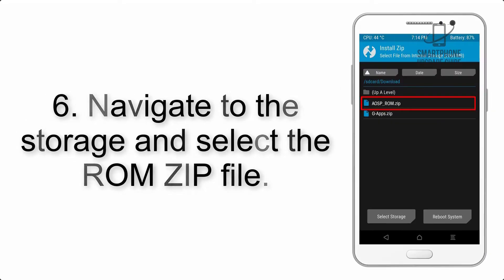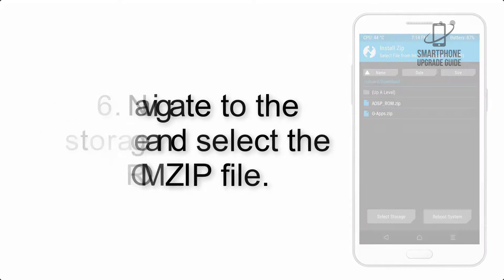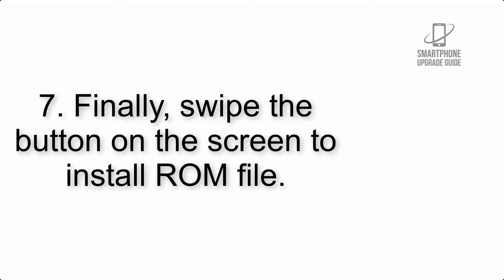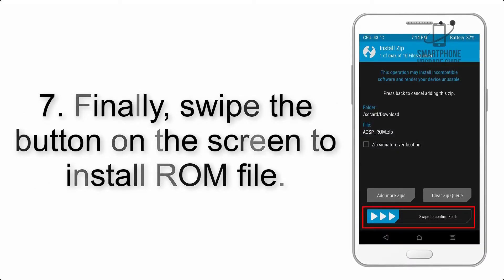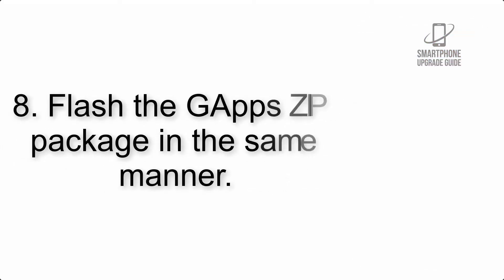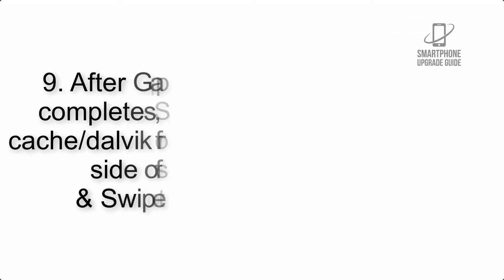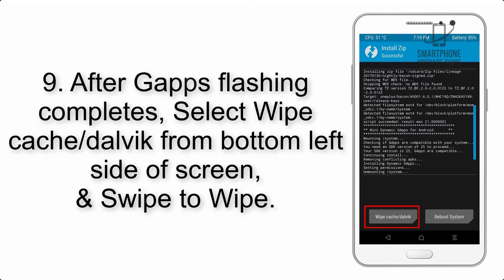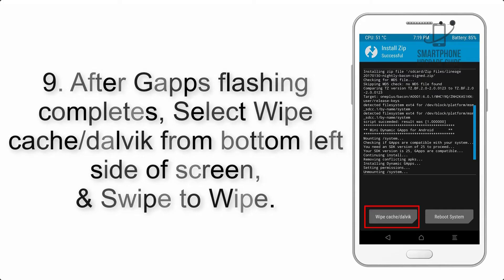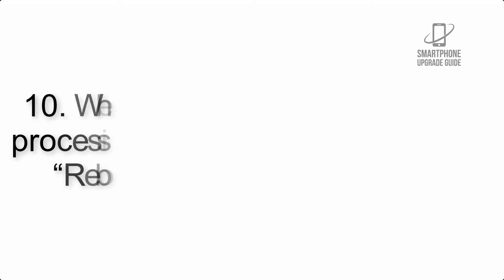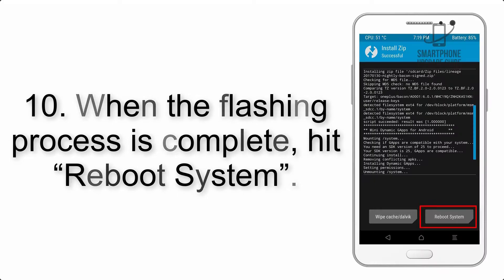Step 5: Go back to the recovery main screen and tap on the Install button. Step 6: Navigate to the storage and select the ROM zip file. Step 7: Swipe the button on the screen to install the ROM file. Step 8: Flash the GApps zip package in the same manner. Step 9: After GApps flashing completes, select Wipe Cache and Dalvik from the bottom left side of the screen and swipe to wipe.